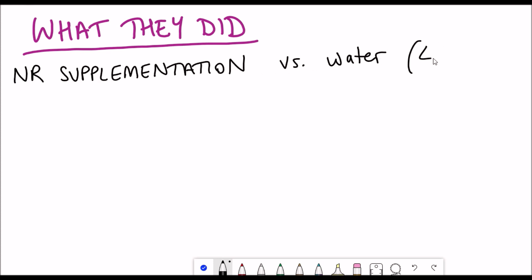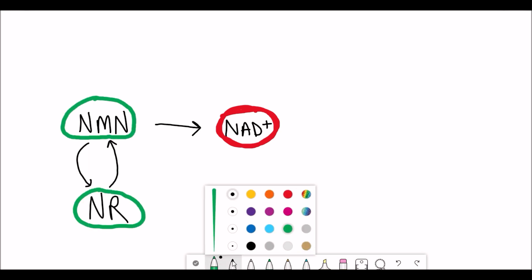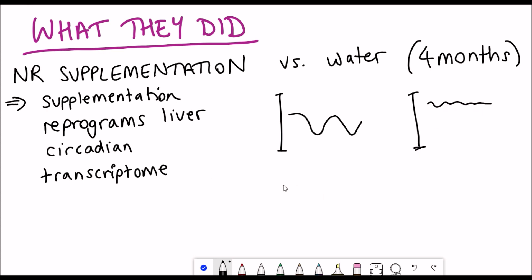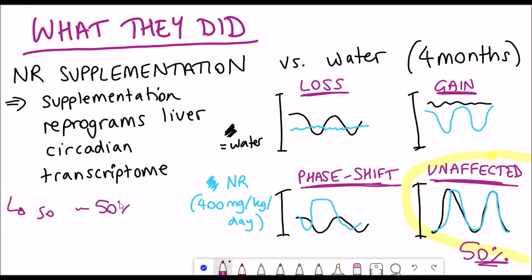They had some mice and they used NR, which is nicotinamide riboside, which is one of these precursors that increase levels of NAD+ that some people take as supplements. They gave the supplement to the mice for four months, and they had a control group that just had normal water. What they saw was by supplementing, they altered the circadian transcriptome. So the genes that are expressed in the 24-hour pattern was altered by the supplementation. There were four different patterns of changes that they saw. As I mentioned earlier, only around 10% of the transcriptome shows oscillations. When they saw the effect of the supplementation, they saw that some genes had lost the pattern, some genes had gained a circadian fluctuation, others had a phase shift, and other genes were unaffected from the supplementation.